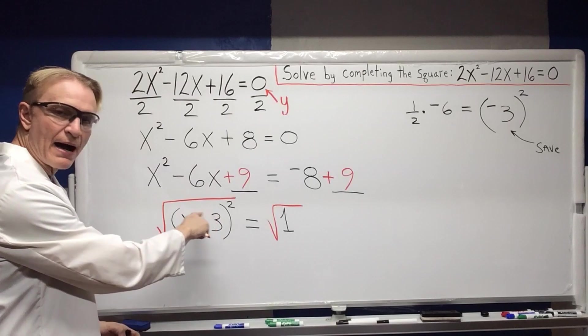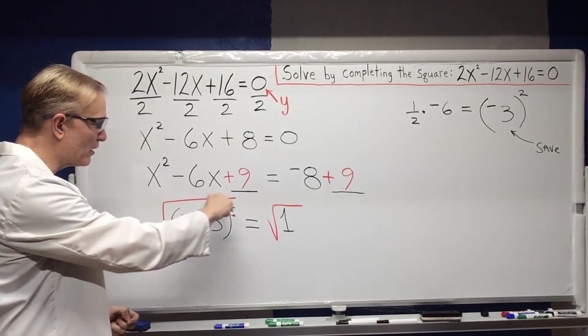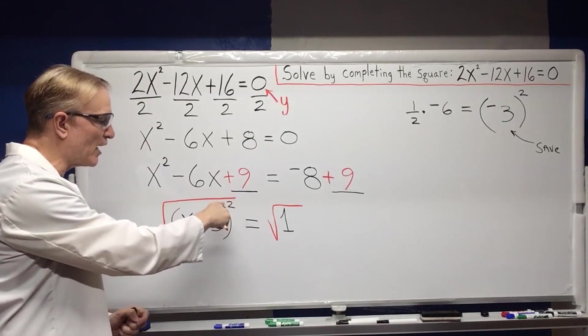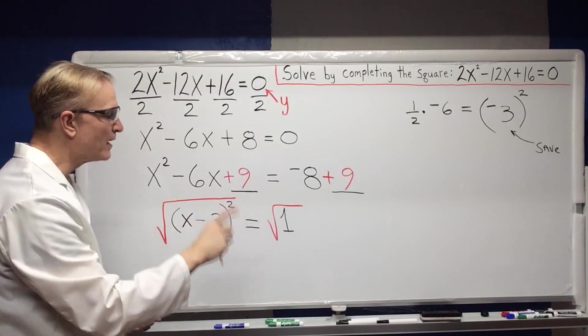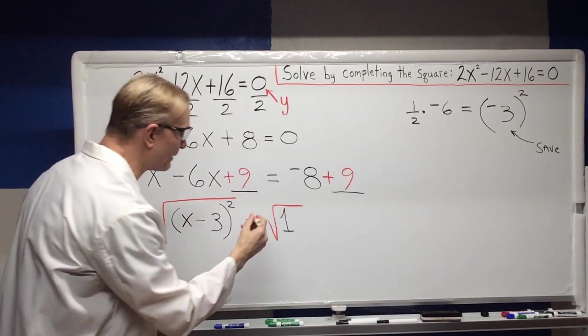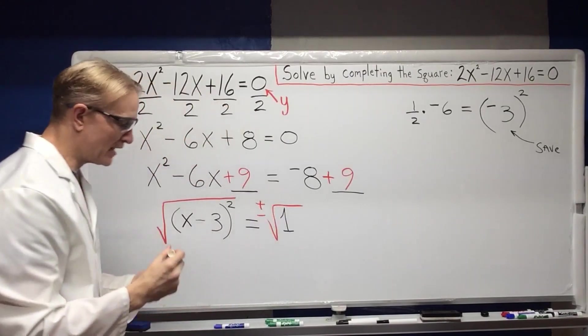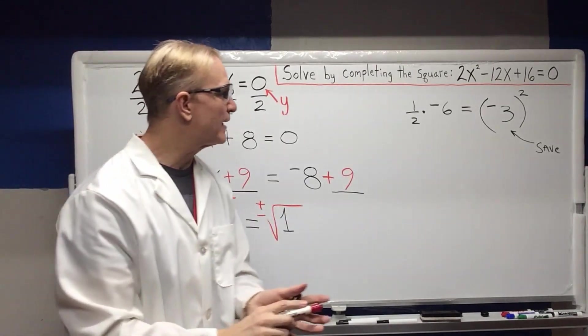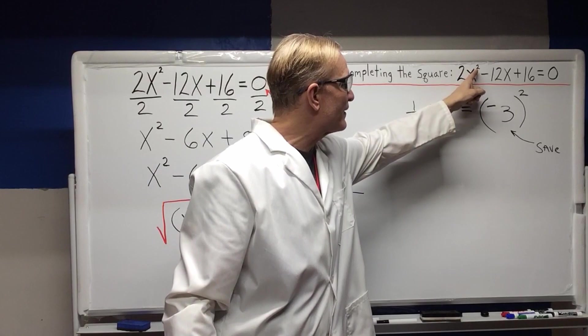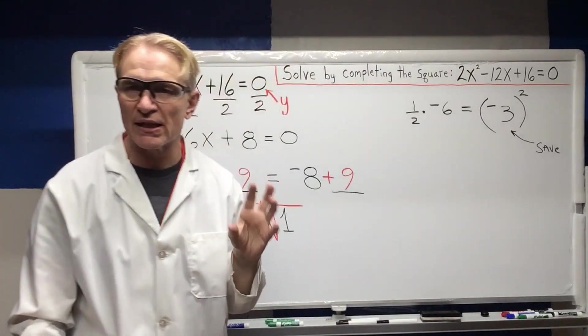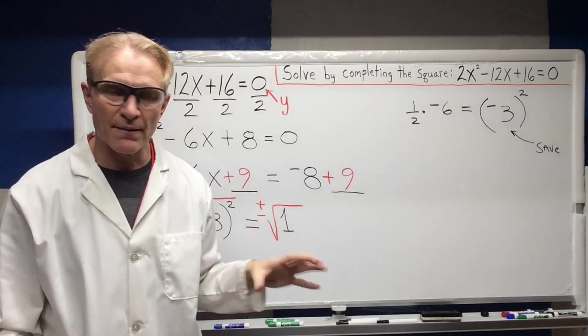the inside will pop out because the square root undoes the square. On the right hand side, I need a plus or minus because we know we have a quadratic and this little 2 up here, this exponent of 2 tells us that we have two solutions coming out of this.